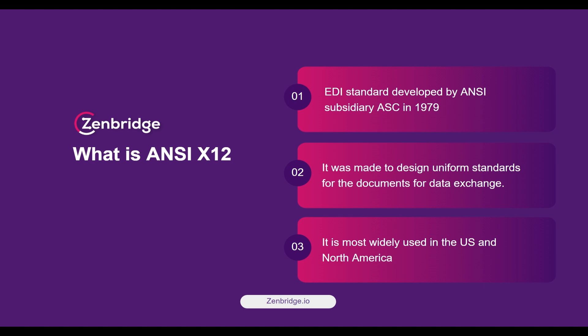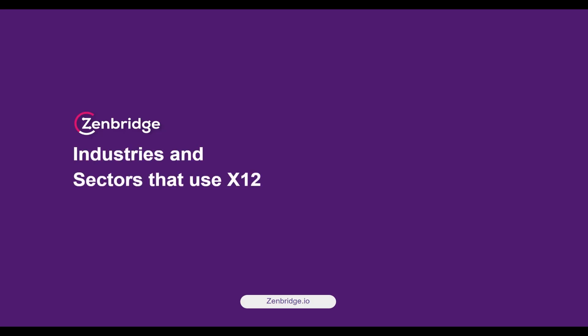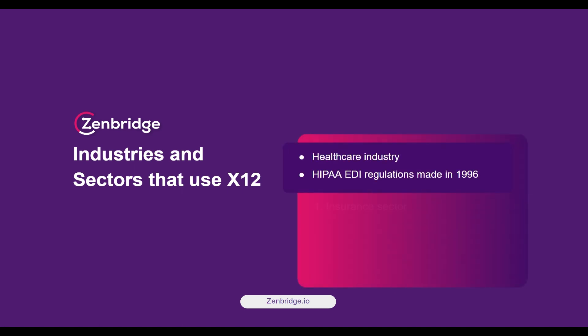Moreover, it made transactions more compatible and secure for businesses. Industries and sectors that use X12 — X12 is prominently used in the healthcare industry to make HIPAA EDI transactions under the HIPAA regulations made in 1996. Other industries and sectors that use ANSI X12 include the insurance sector, finance sector, government services, logistics, and retail.